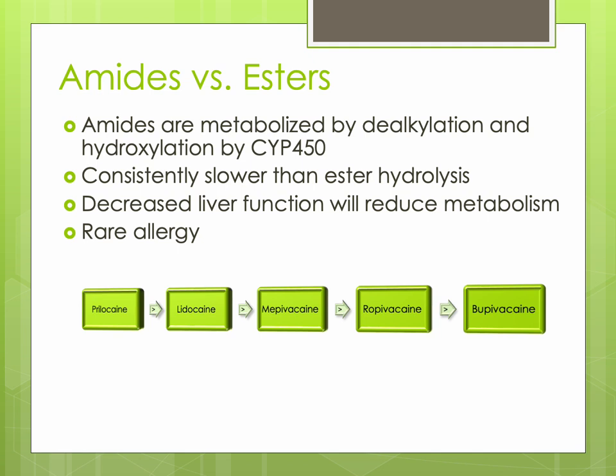Amide anesthetics are metabolized by carboxyl esterase and microsomal P450 enzymes in the liver. Their rate of metabolism is consistently slower than ester hydrolysis. The order from fastest to slowest metabolism is: prilocaine > lidocaine > mepivacaine > ropivacaine > bupivacaine. Decreases in hepatic function or liver blood flow will reduce the rate of amide metabolism. The allergic potential of this class is extremely rare.